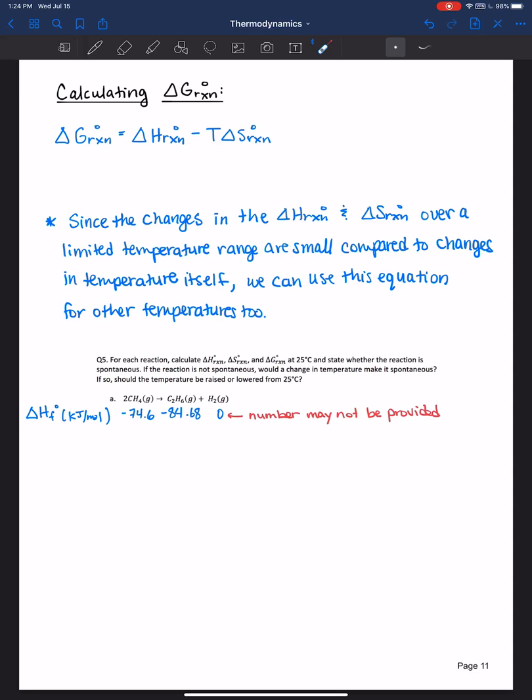Another data that you would have to look up or would be provided for you are the molar entropies. Those are usually in joules per Kelvin mole. It's like talking about per mole of that species itself. Sometimes moles is dropped, so it's like joules per Kelvin and just understood that it's per mole.